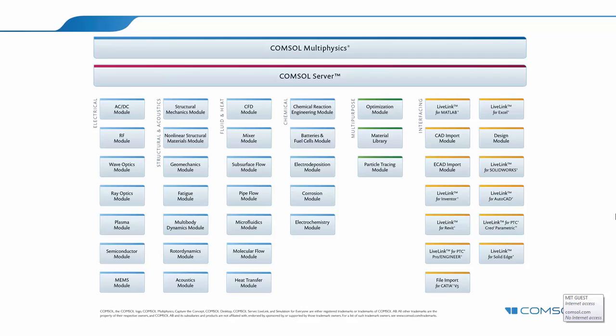The second category is structural. The structural mechanics module covers linear materials; there's a nonlinear structural materials module for plasticity and hyperelasticity. The geomechanics module deals with large-scale rock, concrete, and soil. Fatigue deals with low and high cycle fatigue and thermal fatigue. Multibody dynamics lets you solve many parts assembled together with different joint types and solve rigid and flexible body stress. Rotor dynamics was just released a couple of months ago, dealing with vibrational stress in rotating devices. The acoustics module deals with acoustic propagation in solid and fluid domains.